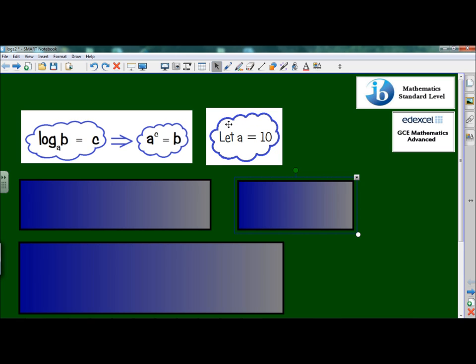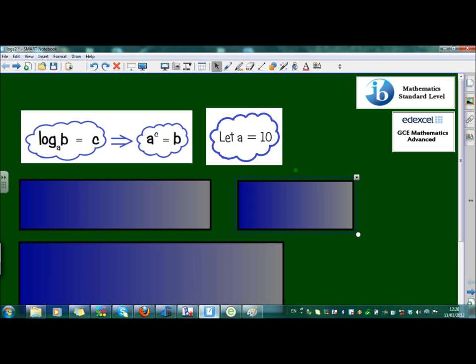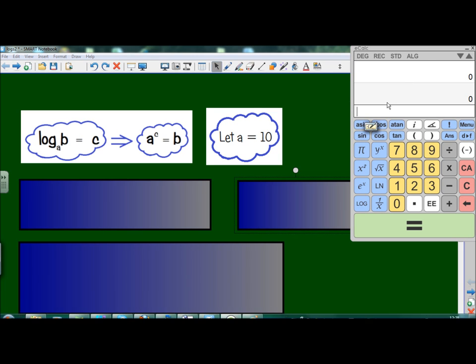So in this video, we're going to let A be equal to 10. So we're going to make the base of the log 10. Now, on your calculator, you'll have two log buttons. You'll have LN, which is the natural log. We won't be using that one. And then you've just got log itself. Log means log to the base 10. So that's the one we're going to be using.